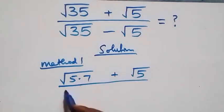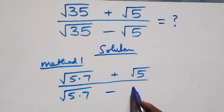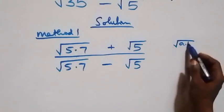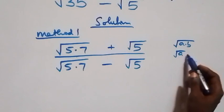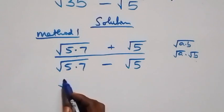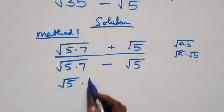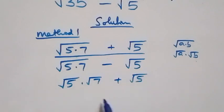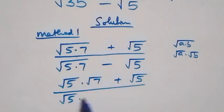Over the denominator we also have √(5×7), then minus √5. From what we have here, it follows that √(a×b) can be written as √a × √b. So this is the same thing as √5 × √7 plus √5, divided by √5 × √7 minus √5.